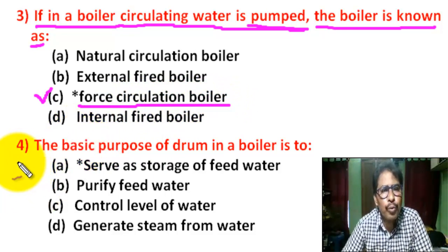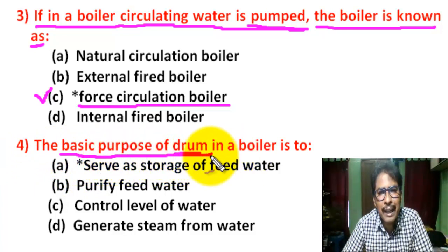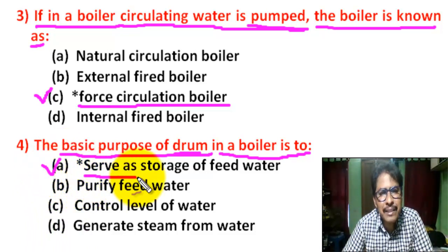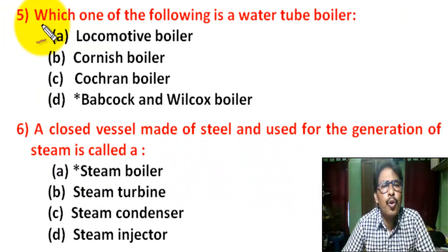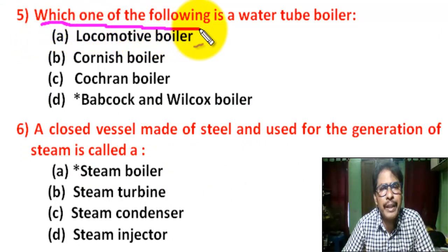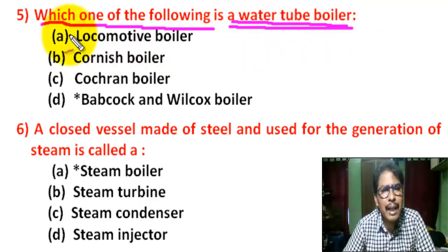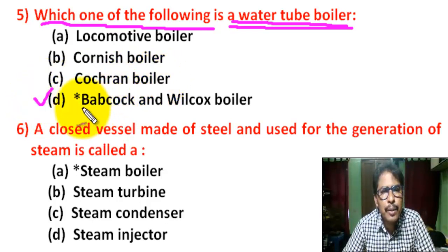Question number 4: The basic purpose of a drum in a boiler is to — there are four options. Correct answer is A: serve as storage of feed water. Question number 5: Which one of the following is a water tube boiler? Options include locomotive boiler, Furnace boiler, Cochran boiler. Correct answer is D: Babcock and Wilcox boiler.